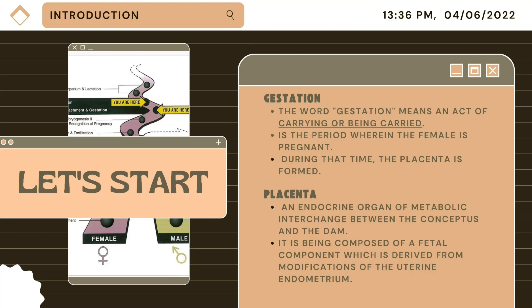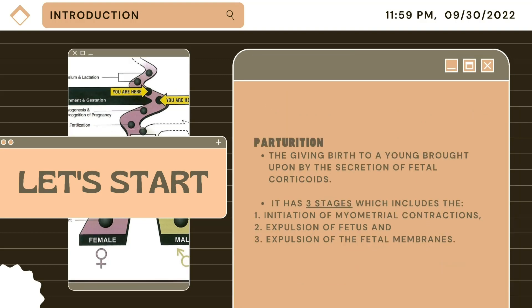The placenta provides a huge role in secreting the hormones that are responsible for the maintenance of pregnancy, stimulation of the maternal mammary gland, and ensuring fetal growth. This leads us to parturition, which is the giving birth to young, brought upon by the secretion of fetal corticoids. It has three stages: the initiation of myometrial contractions, expulsion of the fetus, and expulsion of the fetal membranes.